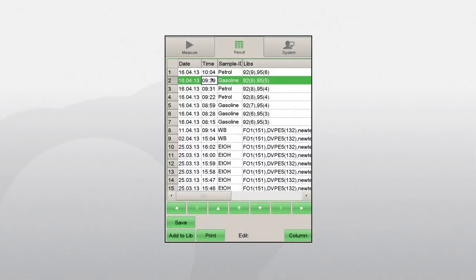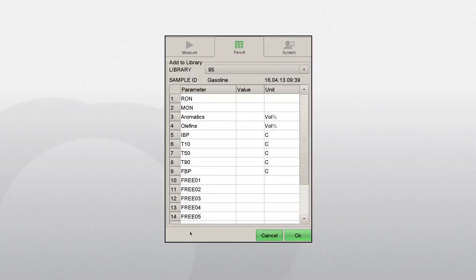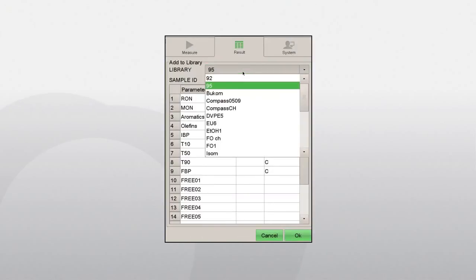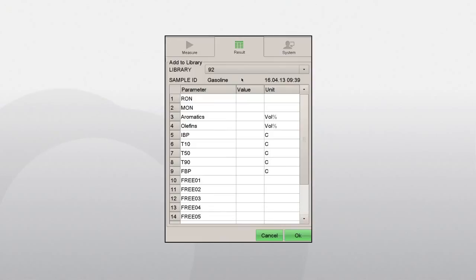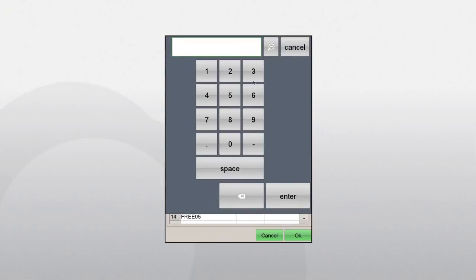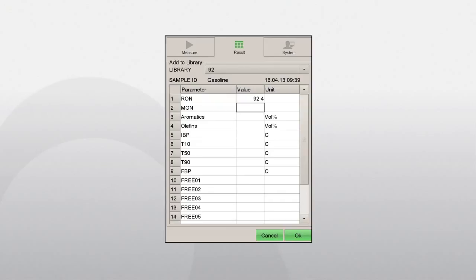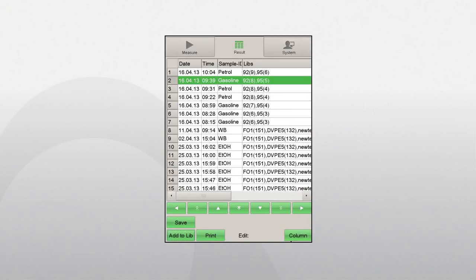Select the desired sample and press Add to Lib. Select the library to which the sample shall be added from the drop-down list in the first line. Then enter the values for all parameters of interest that are available as determined by the respective reference methods. Press OK to store and add this sample to the selected library.